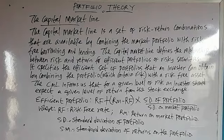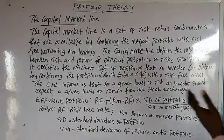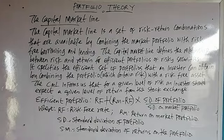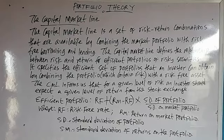For efficient portfolios of risky securities, the CML specifies the efficient set of portfolios that an investor can obtain by combining a risky portfolio with a risk-free asset. The capital market line informs us that at a given level of risk, an investor should expect a given level of return from the stock exchange. In simple terms, we are looking at the best portfolio after combining investments in different portfolios and choosing the one that gives us the highest return — the efficient portfolio.